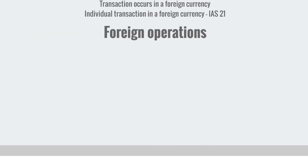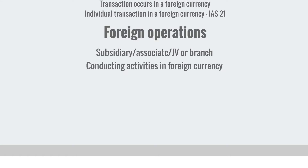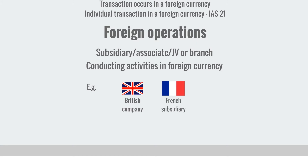The other type of foreign activity is a foreign operation. A foreign operation is an entity that is a subsidiary, associate, joint venture, or branch of a reporting entity that conducts its activities in a foreign currency. So if the British company we were talking about also owns a French subsidiary, all the transactions of that French company would be considered a foreign operation for the UK parent. IAS 21 provides the rules for how to translate that French subsidiary into British pounds so it can be shown in the British company's consolidated statements.